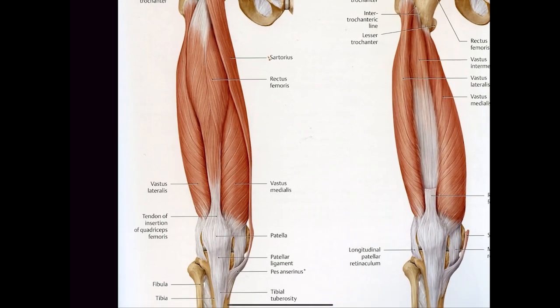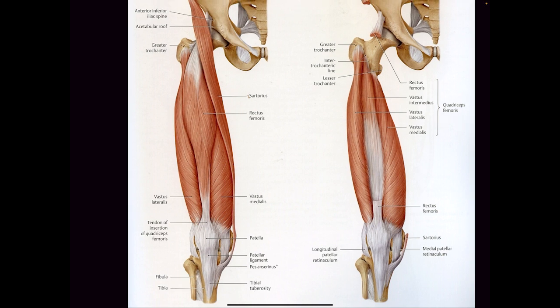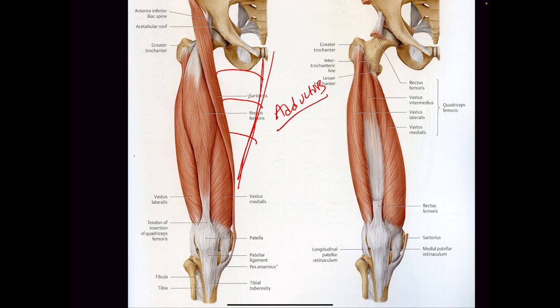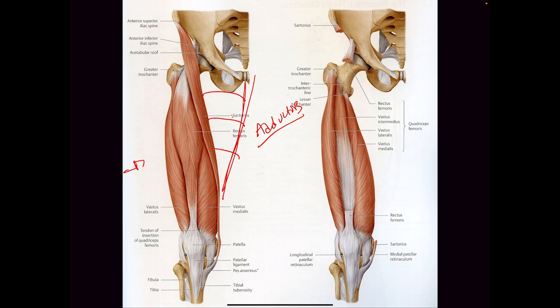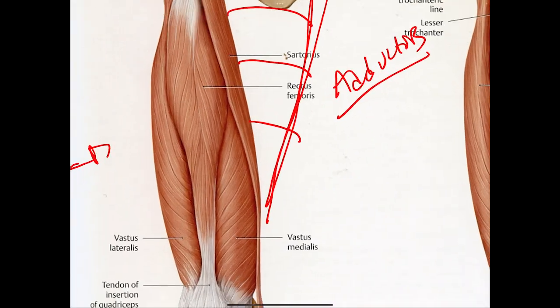Last but not least in your upper legs are your quads. We talked a little bit about the very first muscle that divides your quadriceps. What goes right here? Adductors. So your quadriceps are actually not four visible muscles — how many muscles do you see? One, two, three.